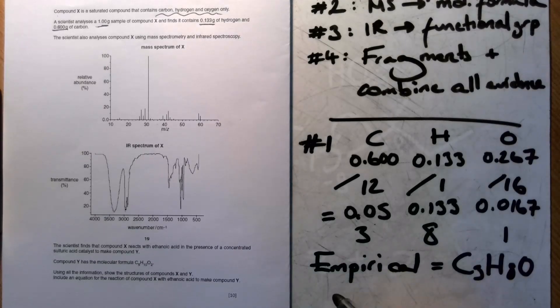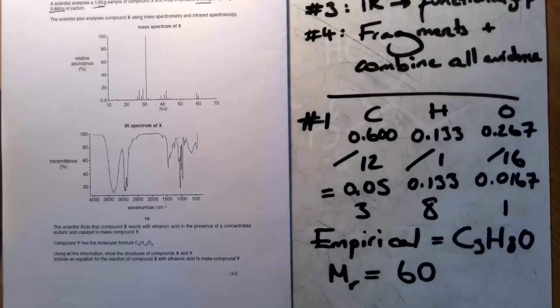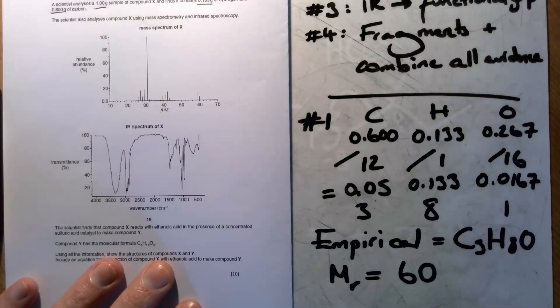Now what we can do is work out that the mass of that is 3 times 12 is 36, plus 8 is 44, plus 16 is 60. So the relative molecular mass of that fragment is 60. So we've done step number one, working out the empirical formula. Then we're going to go on to do step number two.